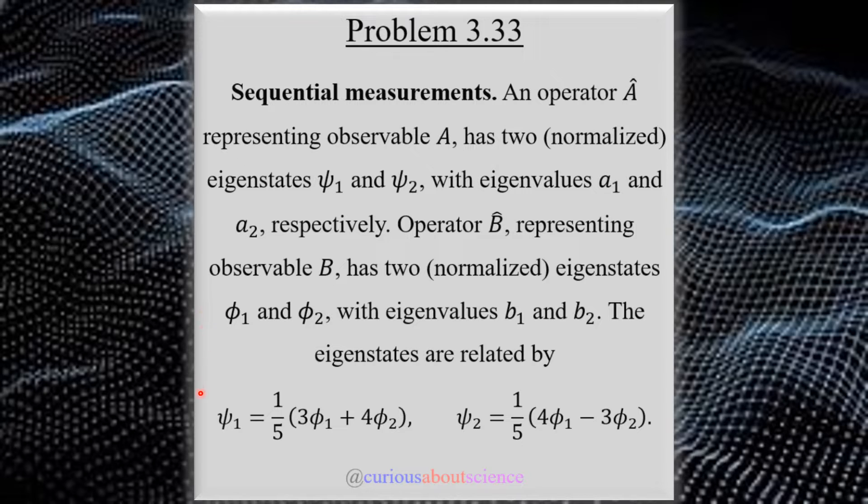The eigenstates are related by psi 1 as a linear combo of phi 1 and 2, and psi 2 as a linear combo of phi 1 and 2. Don't get too worried about which one is on the left-hand side or right-hand side. These will become interchangeable, as we'll see soon enough in this question.